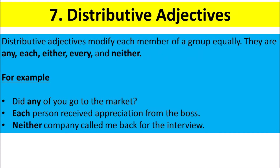Distributive Adjectives. Distributive Adjectives modify each member of a group equally. They are: any, each, either, every, and neither. For example, Did any of you go to the market? Each person received appreciation from the boss. Neither company called me back for the interview.